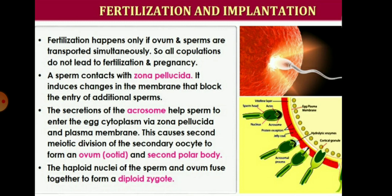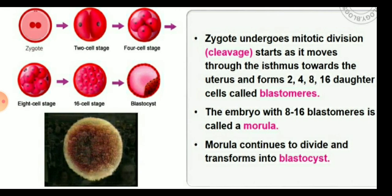This causes the second meiotic division of the secondary oocyte to form the ovum, or we can say the secondary polar body is formed. The haploid nuclei of the sperm and ovum fuse together to form a diploid zygote. This fusion of the male and female gamete is called fertilization, and the cell formed is called the zygote.